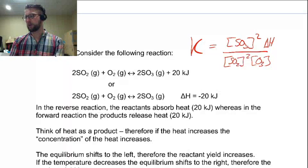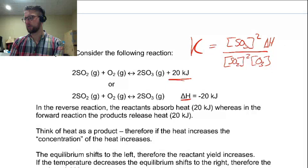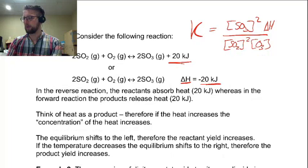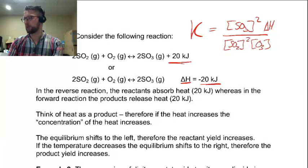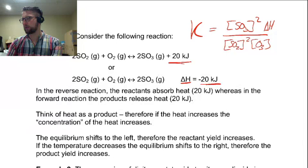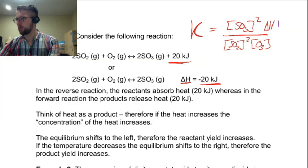A change in temperature. Watch out — sometimes they're going to write the change in energy as a product in the equation. Other times they'll write delta H and note that delta H is negative to show that it's a product, or positive to show that it's a reagent. So delta H is kind of okay in the equation here, but we are really thinking about balancing this equation — this equation must always be equal to this number at the point of equilibrium. So if you change something, for example if you add temperature, you must increase these values here and decrease this value in order to balance out that equation.